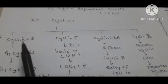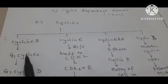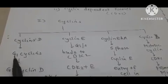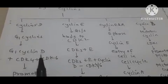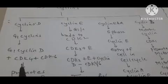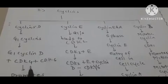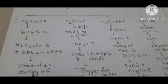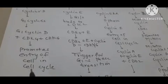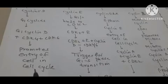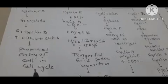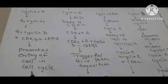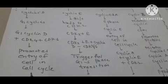Cyclin D particularly participates during the G1 phase, so it is called the G1 cyclin. Cyclin D combines with cyclin-dependent kinases CDK4 and CDK6, forming a complex. When this complex is formed, there is a signal that the cell has to enter the cell cycle. This is a promoter signal for entry of a cell into the cell cycle.